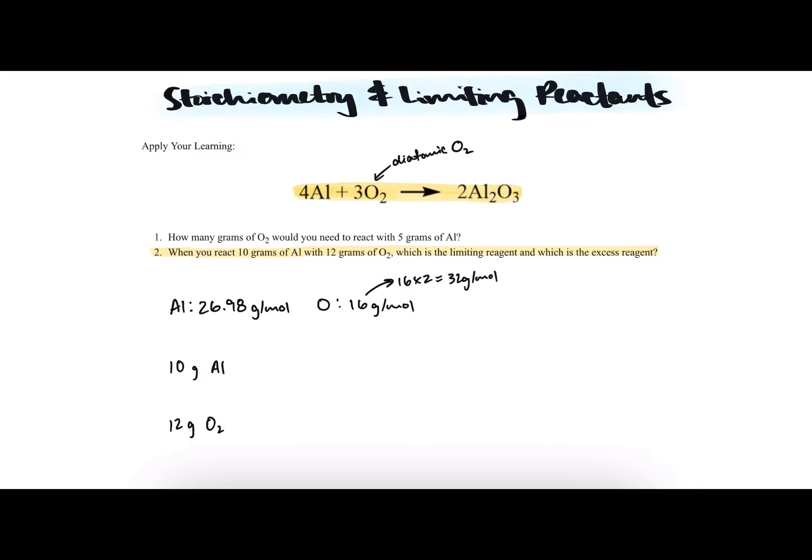Starting with 10 grams of aluminum, first convert to moles so we can use the ratio in the chemical equation. We convert to moles by dividing by the molar mass, which is 26.98 grams per mole.